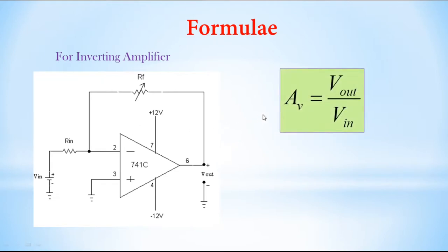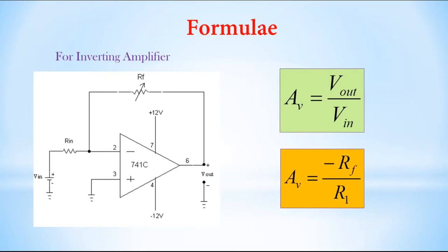The voltage gain of the inverting amplifier is defined as the ratio of output voltage to input voltage, represented by AV. For the inverting amplifier, voltage gain is equal to minus RF divided by R1. The negative sign indicates that if an AC signal is given as input, the phase difference between output and input voltage is 180 degrees. Or if we provide a positive DC voltage, at the output we will receive a negative output voltage.